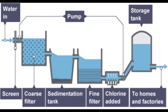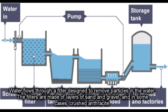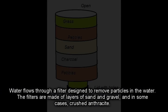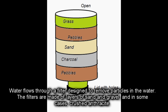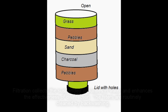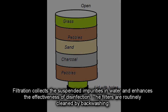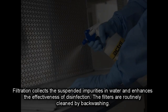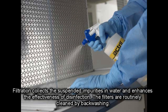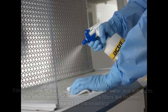Filtration: Water flows through a filter designed to remove particles in the water. The filters are made of layers of sand and gravel, and in some cases crushed anthracite. Filtration collects the suspended impurities in water and enhances the effectiveness of disinfection. The filters are routinely cleaned by backwashing.